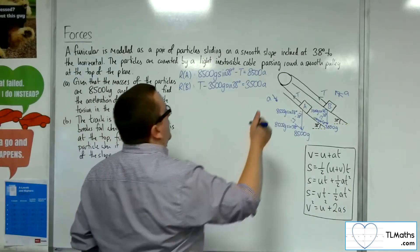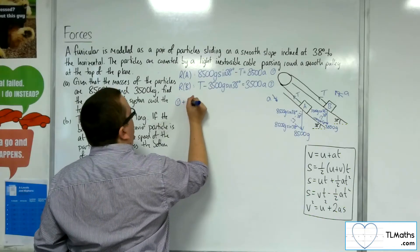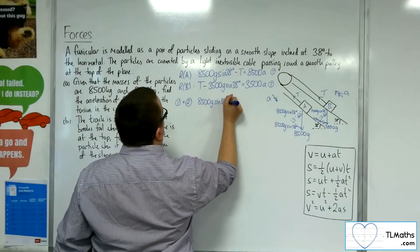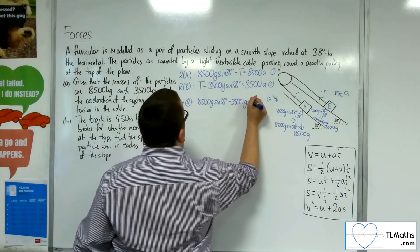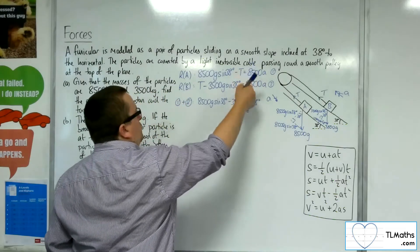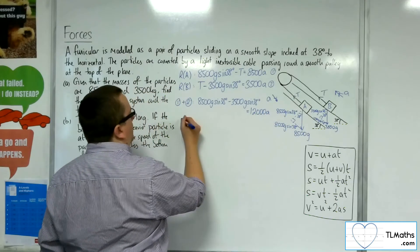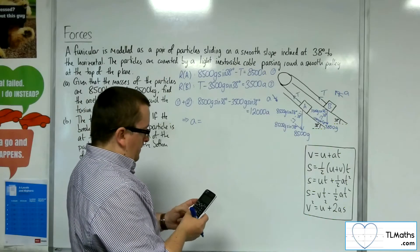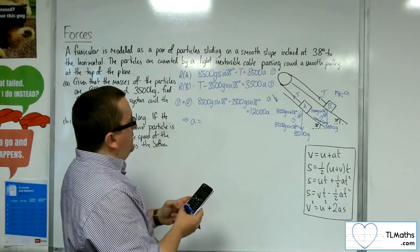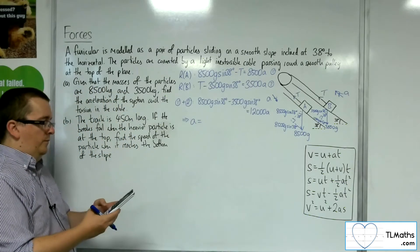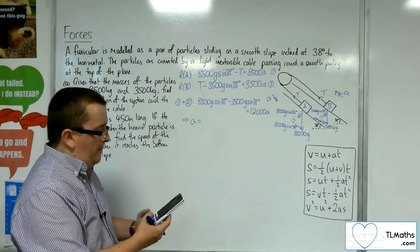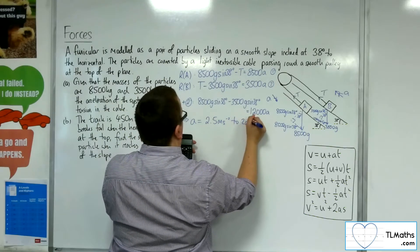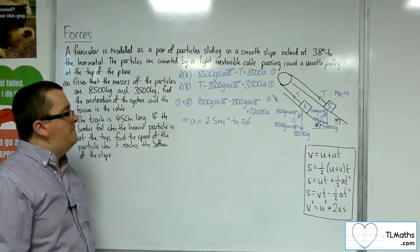Here are the two equations — let's number those 1 and 2. Adding them together knocks out the T's: 8,500G sine 38 minus 3,500G sine 38 equals 12,000A. So 8,500 × 9.8 × sine 38 minus 3,500 × 9.8 × sine 38 gives 30,167. Dividing by 12,000 gives A = 2.51 metres per second squared to two significant figures.